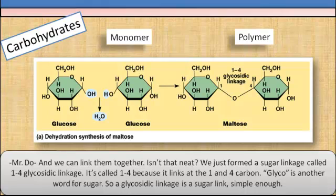Isn't that neat? We just form a sugar linkage called 1,4 glycosidic linkage. It's called 1,4 because it links at the 1 and the 4 carbon. Glyco is another word for sugar, so a glycosidic linkage is a sugar link. Simple enough.